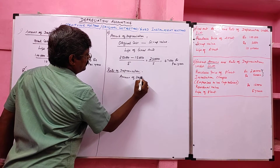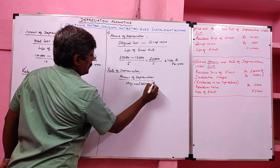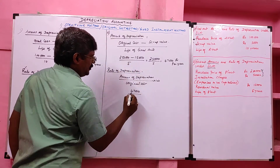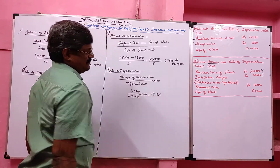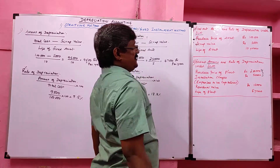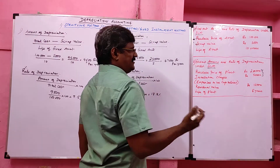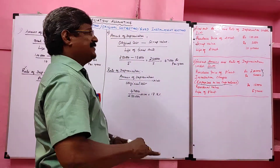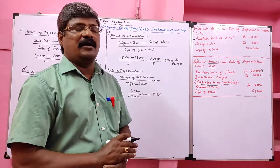Rate of depreciation formula: Amount of Depreciation divided by Original Cost or Total Cost, multiplied by 100. Amount of depreciation is 47,000 and original cost is 2 lakh 50,000, so the rate of depreciation is 18.8 percent. The difference between Problem 1 and Problem 2 is that in Problem 2, initial expenses on installation are given — these are capitalized and added to the fixed asset value to get the total cost.